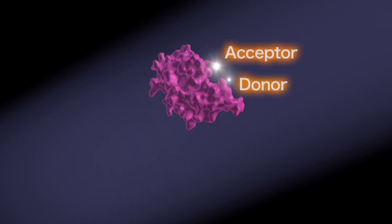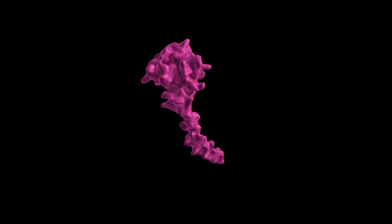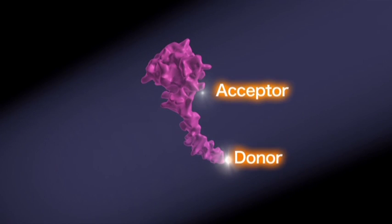The project team attached two shining dyes to the epsilon subunit, one called acceptor and the other donor. When the subunit is contracted and donor and acceptor are close together, donor does not shine much because its energy is transferred to acceptor. But when the subunit is extended and donor and acceptor are far apart, donor shines. As a result, its light clearly indicates the shape of the epsilon subunit.